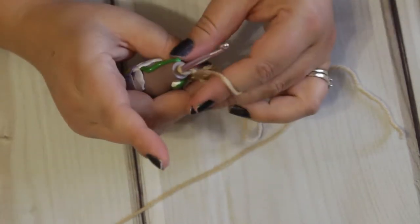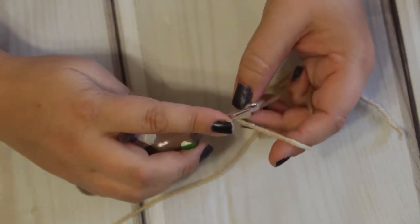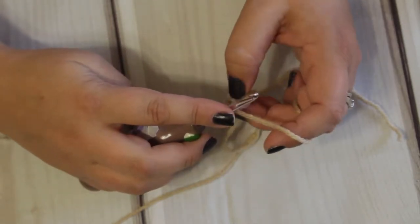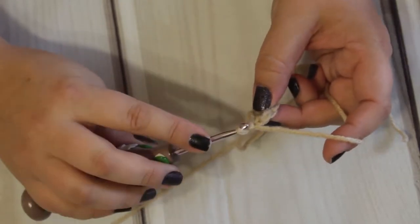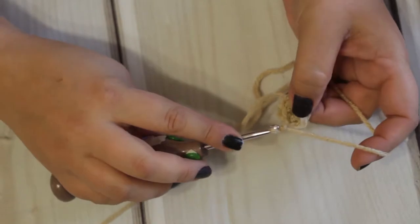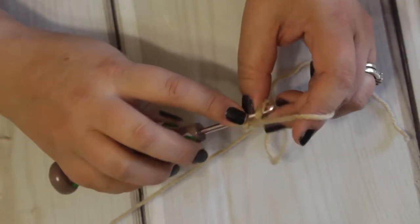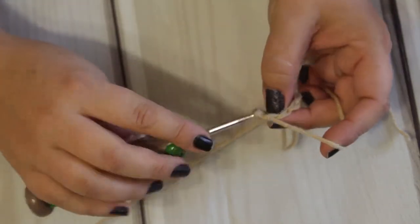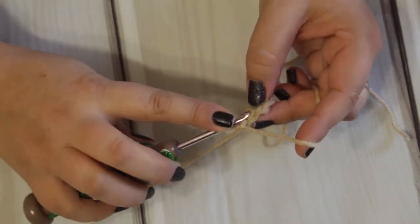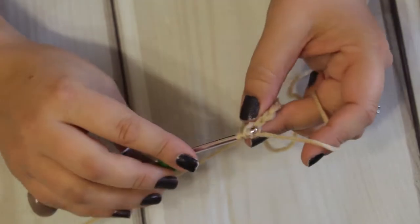So the next step here is going to be two single crochets in each stitch around and we will slip stitch again into the first. Now our starting chain does not count in this pattern as a stitch, so we're going to go ahead and just do one, and pull my yarn out here, two.